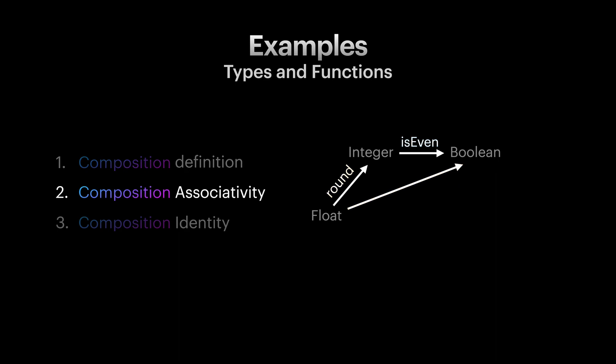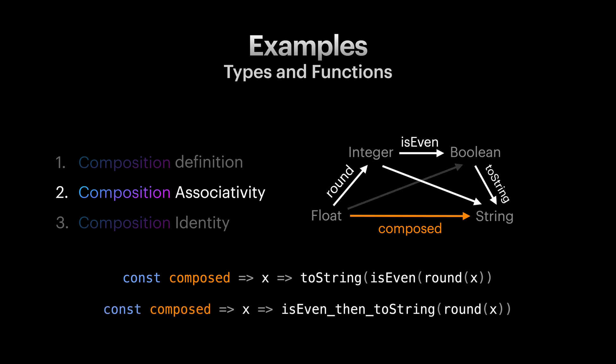Next, let's check and see if our function composition is associative. In order to do that, let's extend our example and add to a string function at the end of the chain. And we know by using the first rule, we can have all these functions and arrows as well. The function composed can be implemented like this. The question is, should we compose is even and to a string first, or we should compose round and is even first? Good news is, it doesn't matter. As long as our functions are pure, then both lead to the same result.